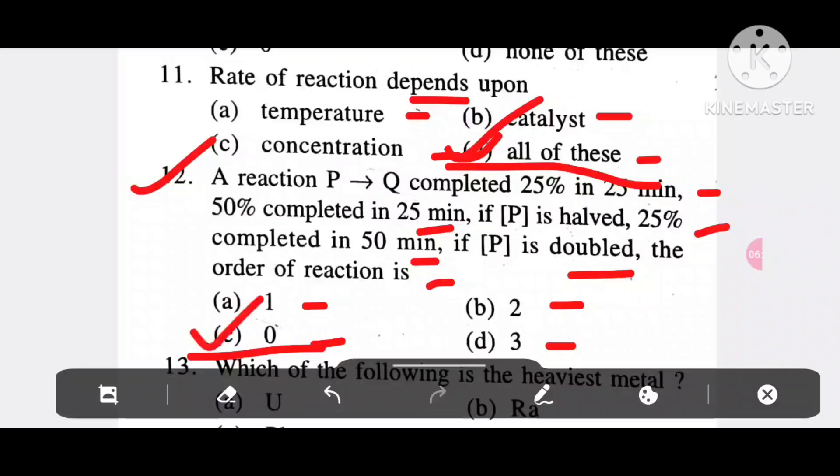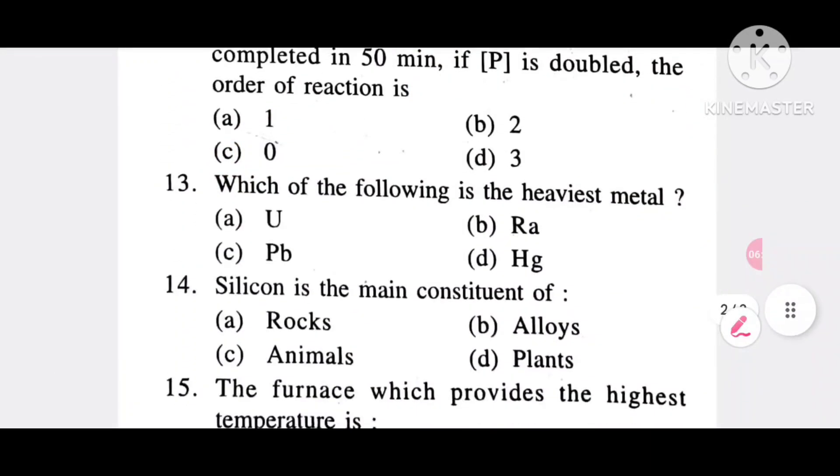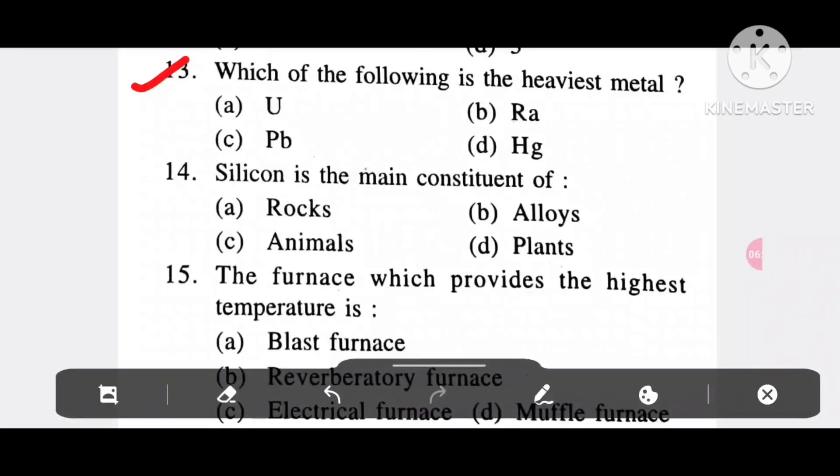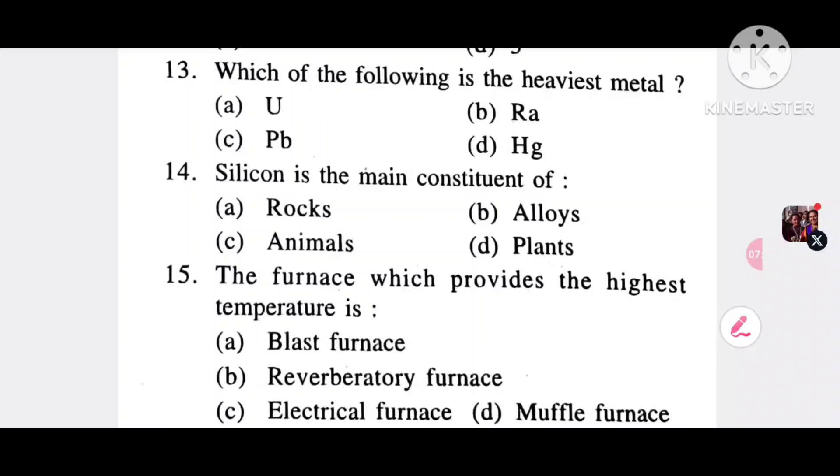Question 13: Which of the following is the heaviest metal of U, Ra, Pb, and Hg? It is U, option A. Question 14: Silicon is the main constituent of option A, rocks; option B, alloys; option C, animals; option D, plants. It is option A, rocks.